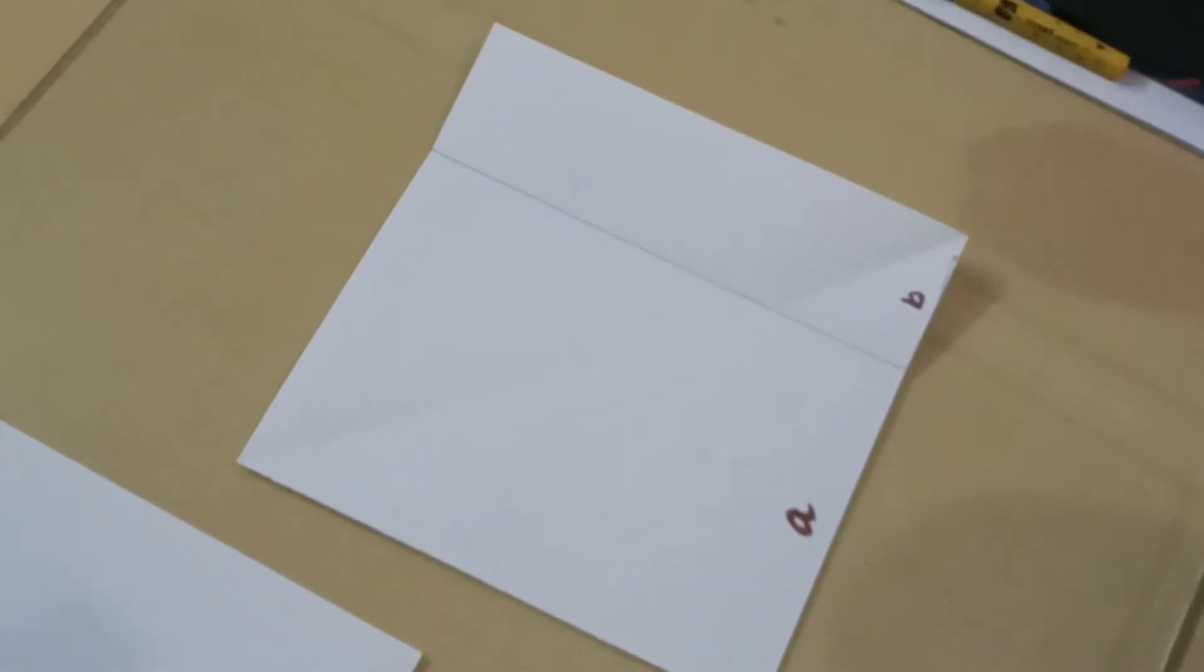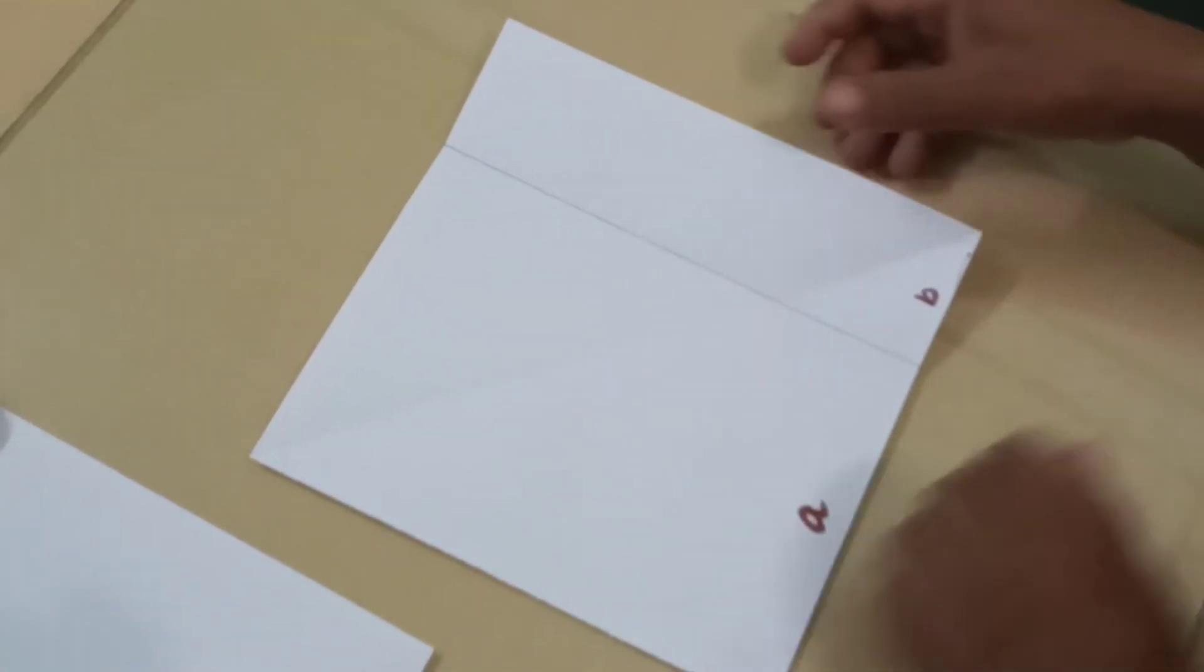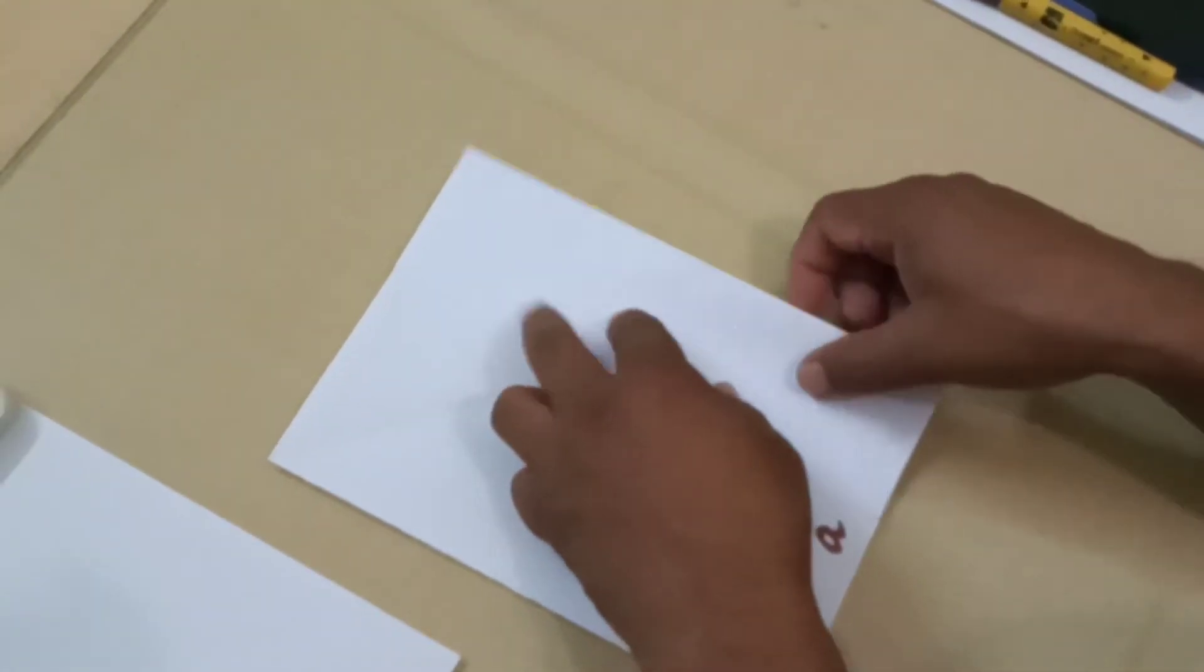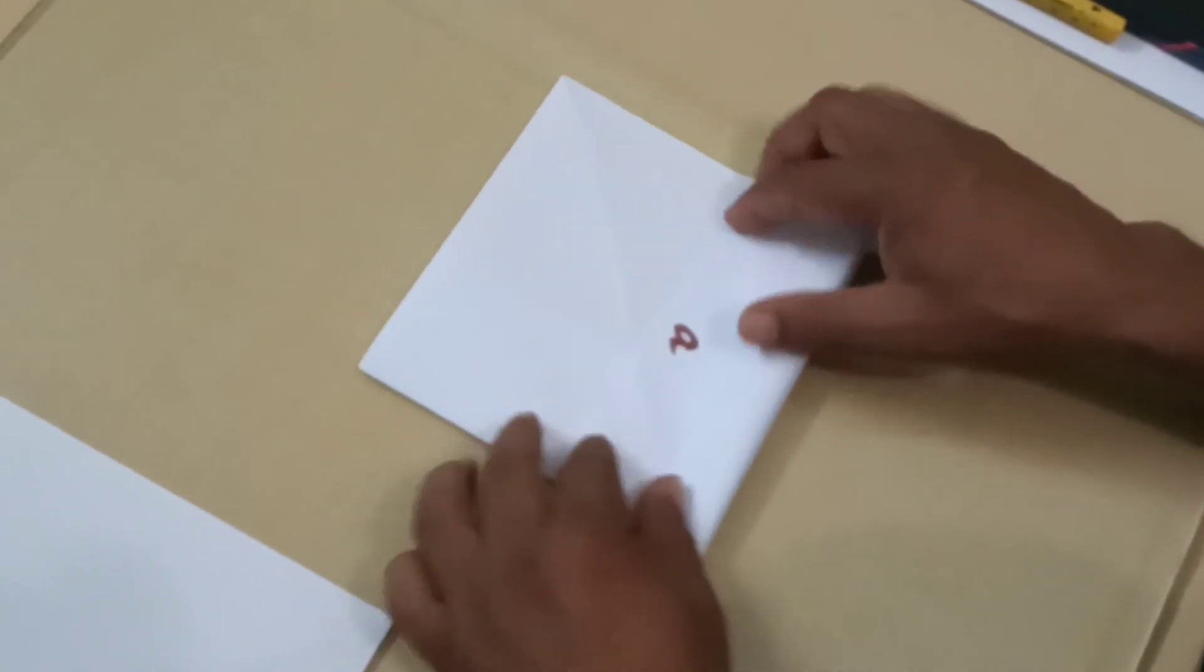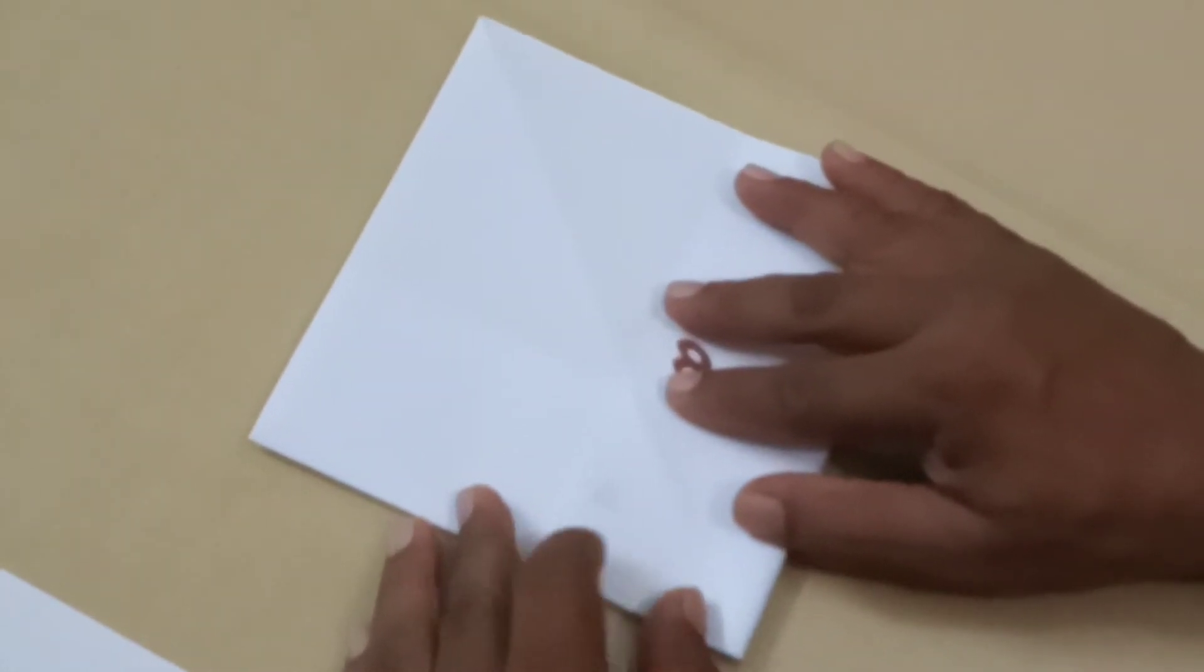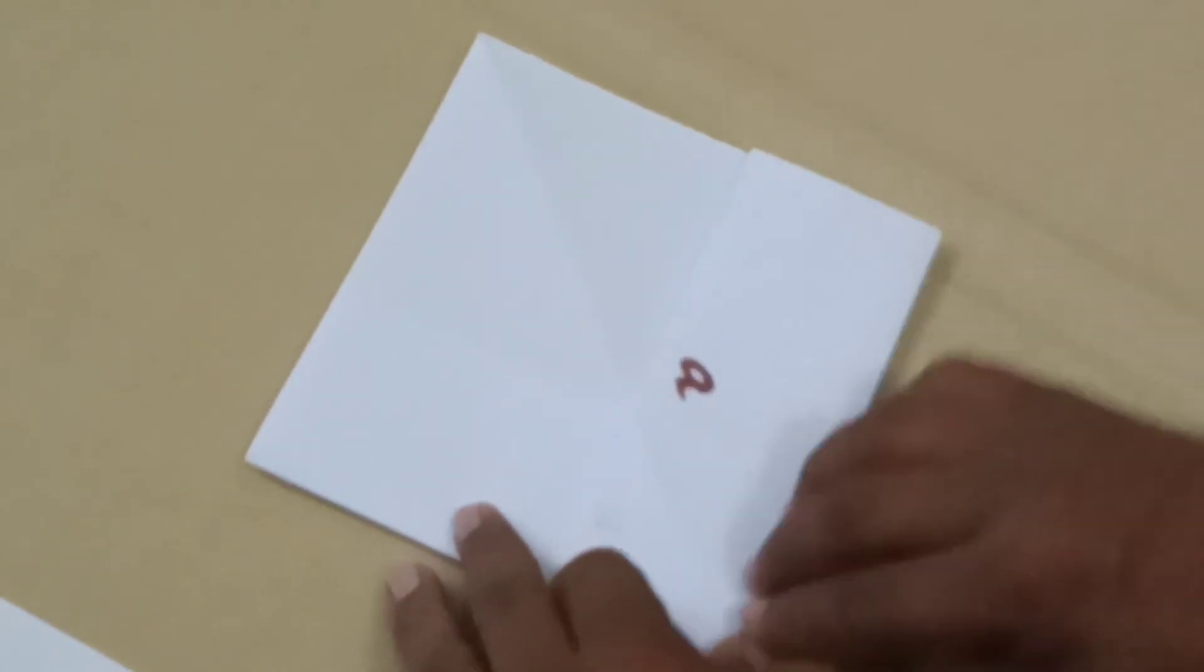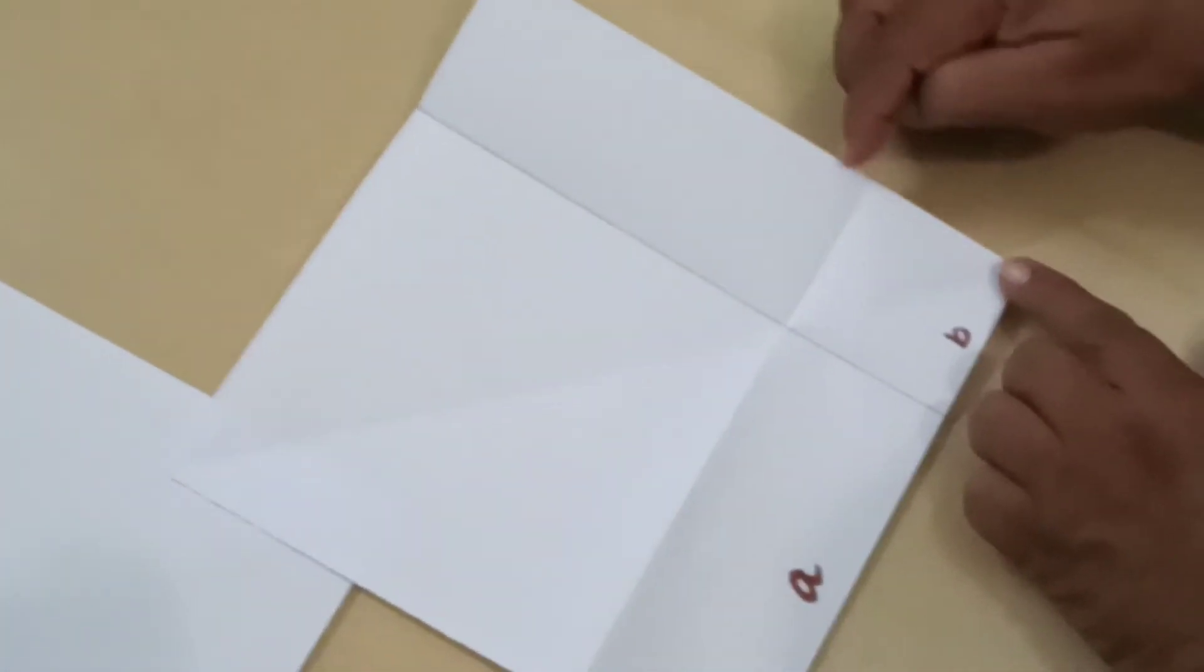So similarly we will have to divide even this side into a and b. So for that what we will have to do is we will fold this like this and we will turn this paper over like this and we will fold this side and when we do that we will make sure that the diagonals are perfect. So we have now divided even this side into a and b.